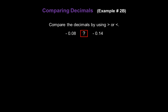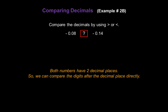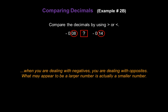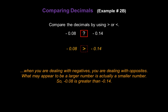Let's compare a couple of negative decimals: negative 0.08 with negative 0.14. Both numbers have two decimal places — 08 on the left and 14 on the right. 14 is larger than 8, but when you're dealing with negatives, you're dealing with opposites. So what may appear to be a larger number turns out to be a smaller number. Therefore, negative 0.08 is greater than negative 0.14. Remember, with negatives it's the opposite of what you'd expect with positive numbers.